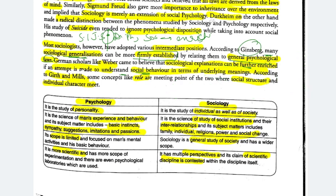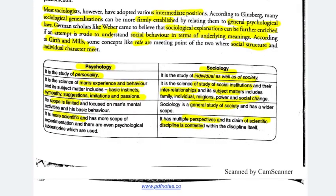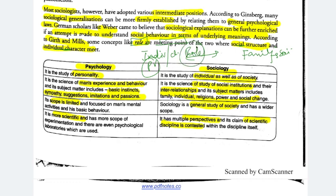We will learn Weber's concepts in more detail in chapter 4. According to Gerth and Mills, some concepts are a meeting point where social structure and individual characters meet. For example, an individual's character is related to psychology and there is a family institution related to sociology. The individual takes up roles according to the institution — father, brother, son — and in each interaction, psychology changes accordingly. So the role is a meeting point between psychology and social structure.